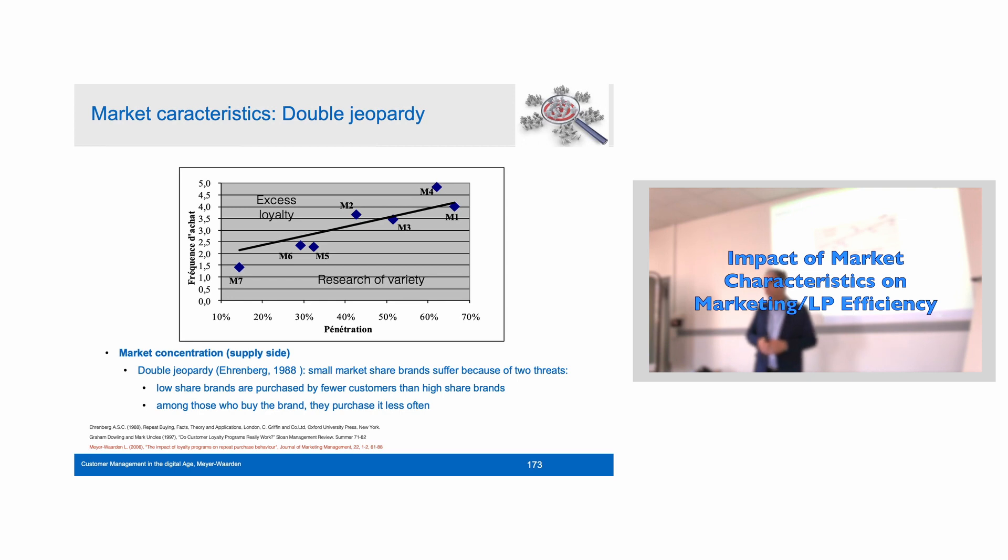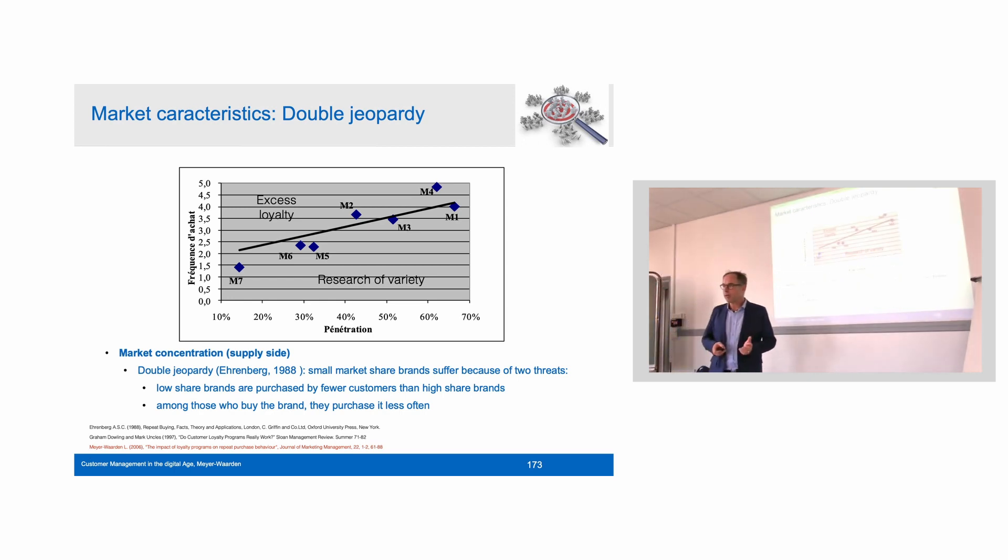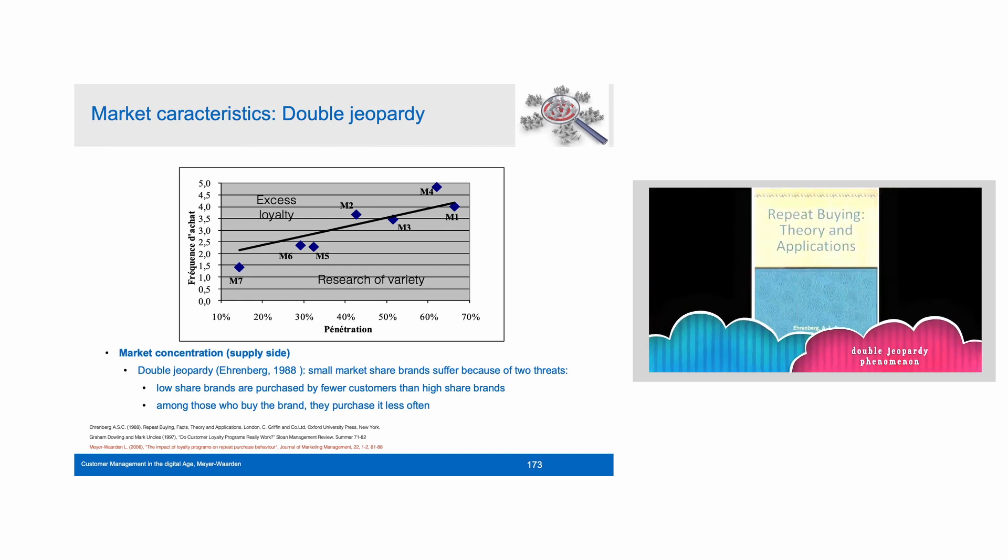When assessing the performance of a marketing tool, including loyalty programs, you have to consider market characteristics. In this context, I would like to present the double jeopardy phenomenon or the double jeopardy law. There are very few laws in marketing or social science, but double jeopardy is a law in marketing that was discovered by Andrew Ehrenberg.